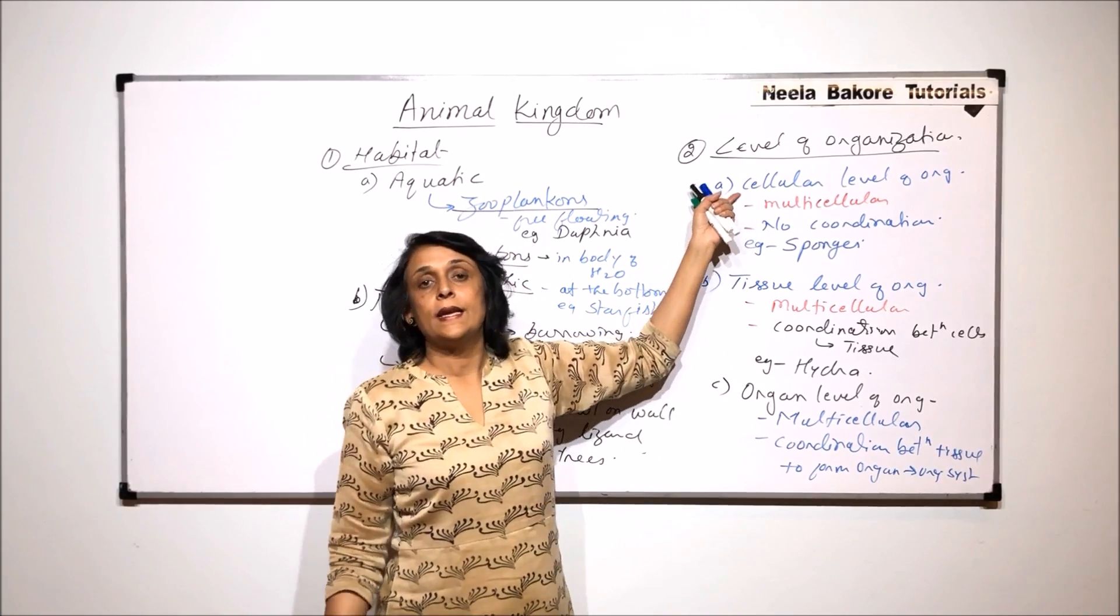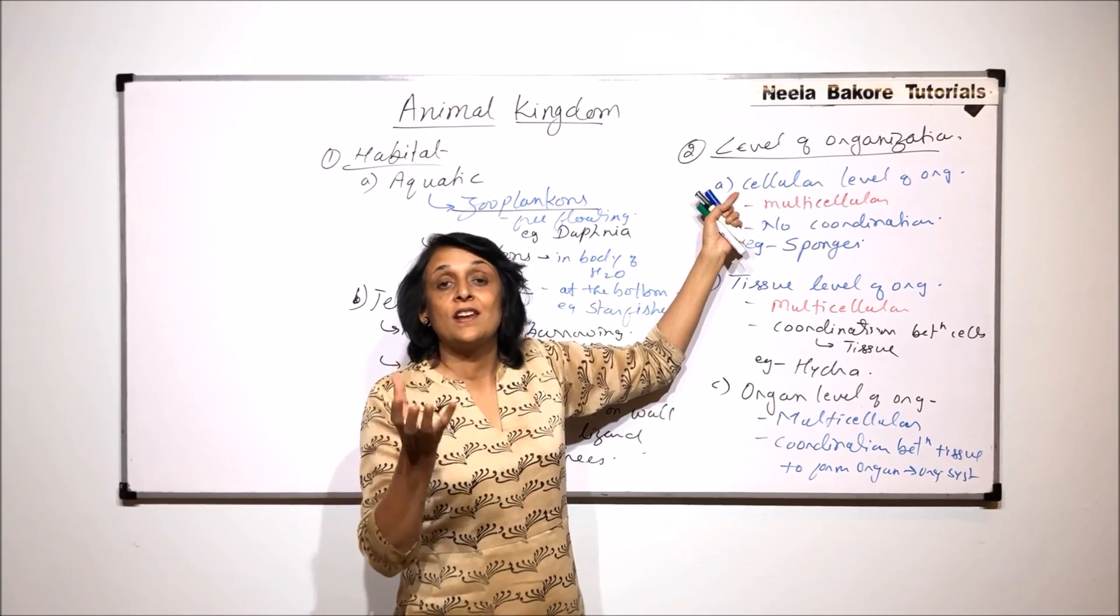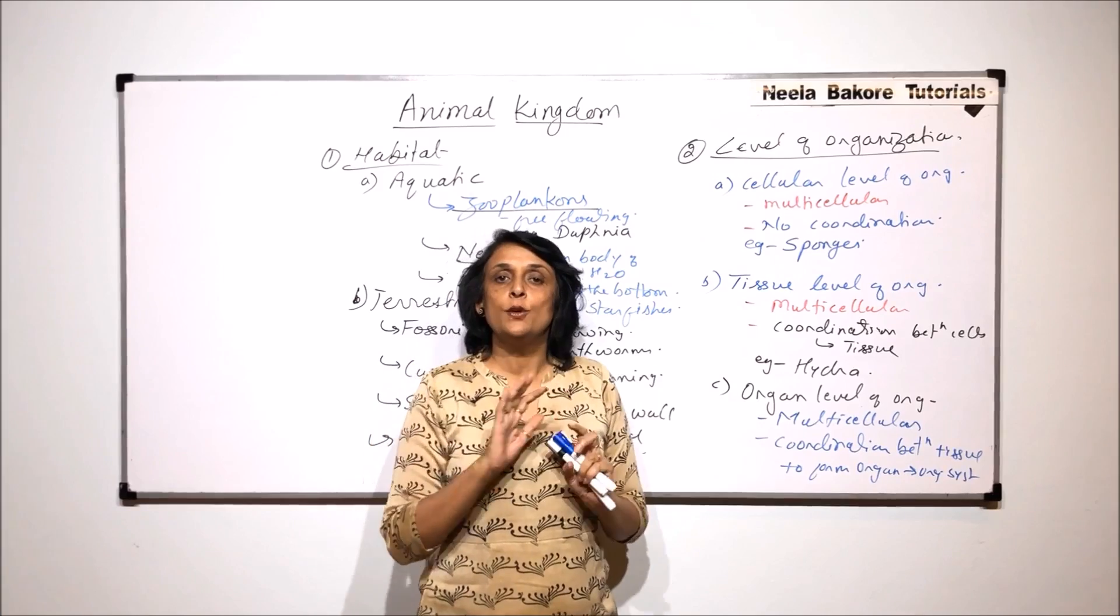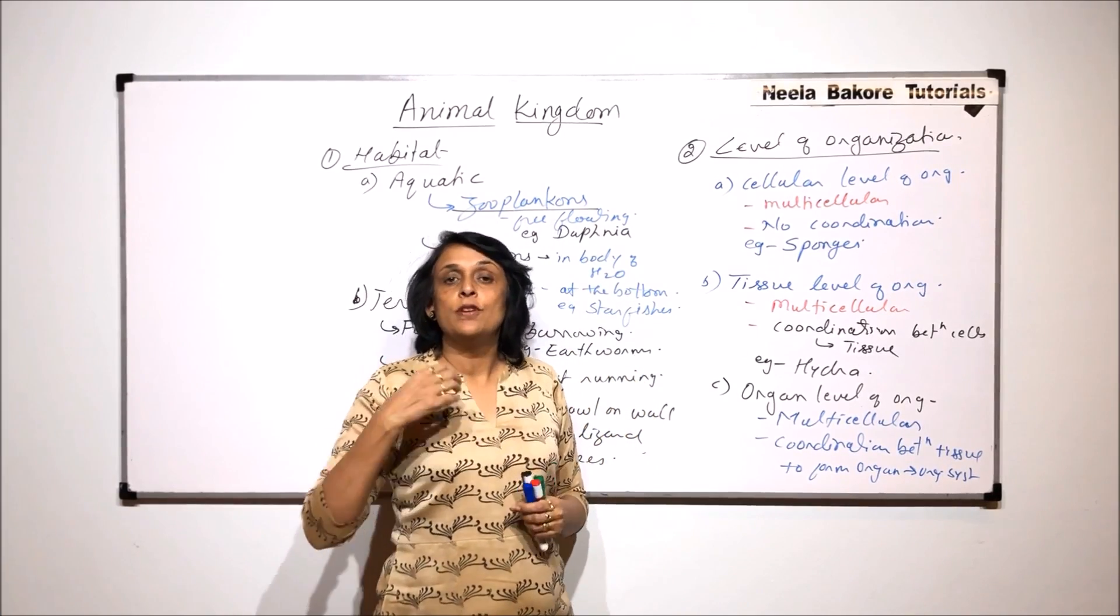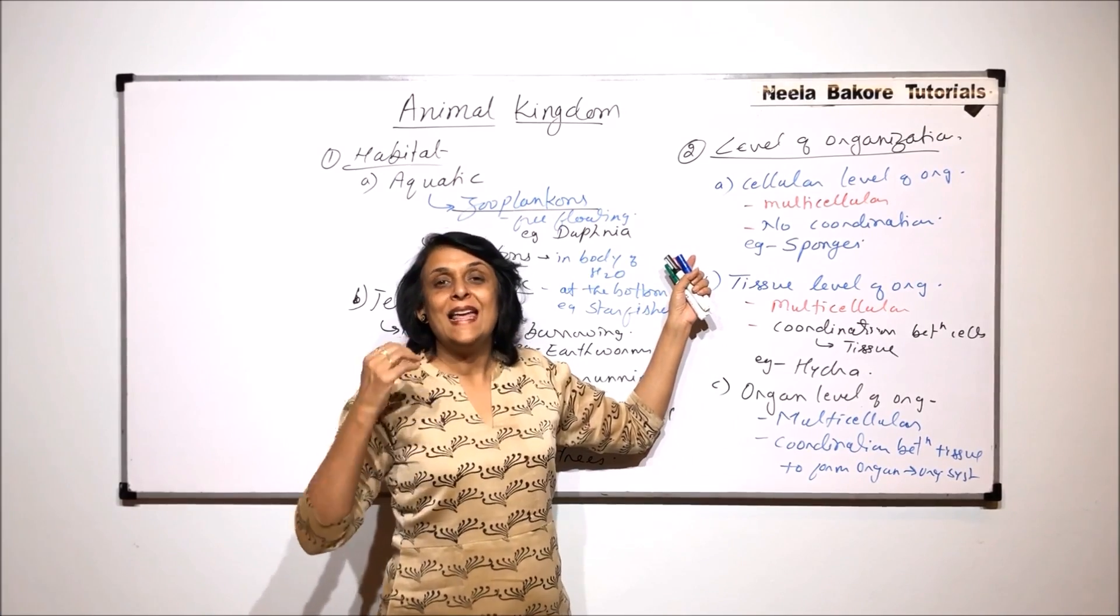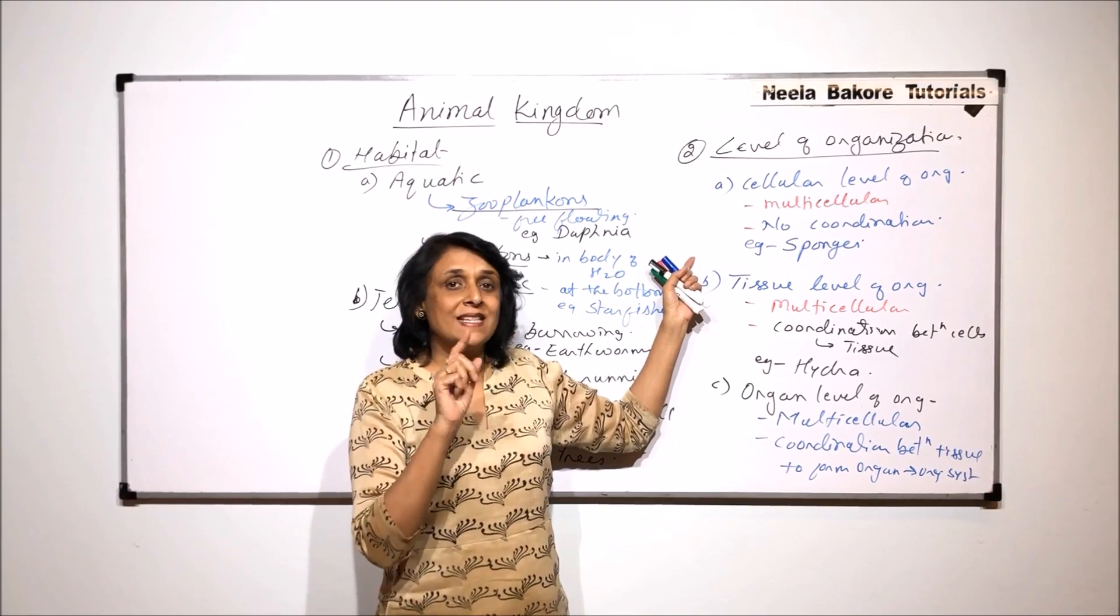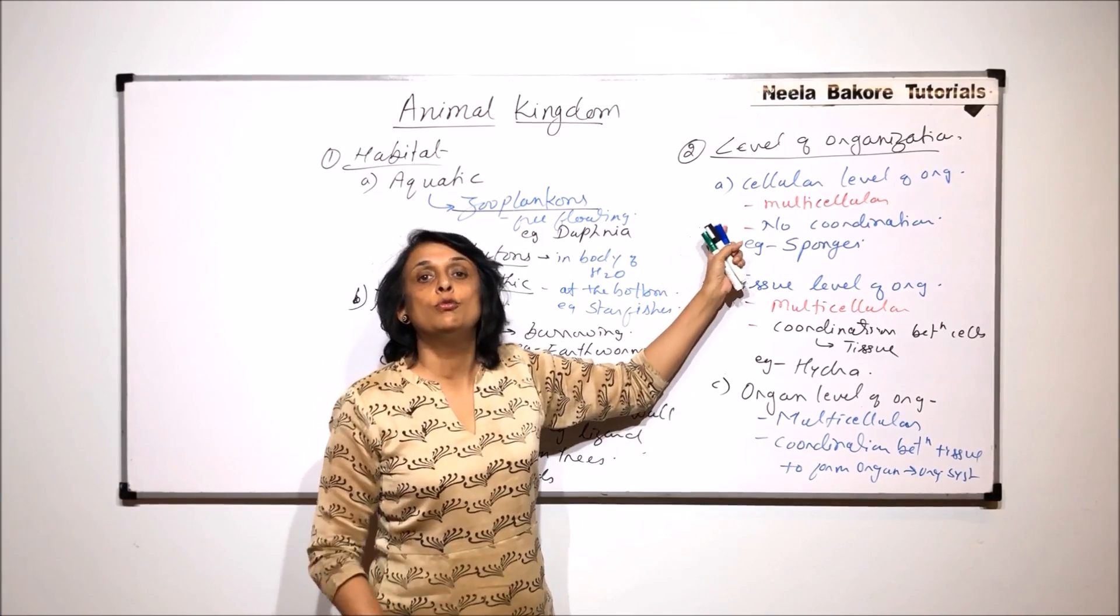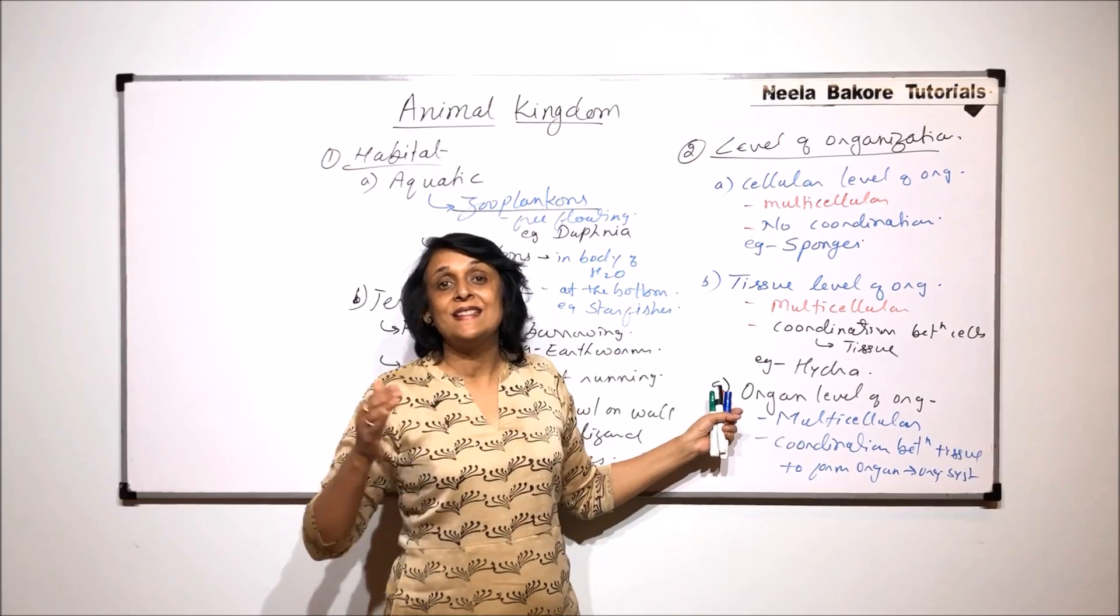As we said here there is cellular level, that means the body of the animal is made up of a cluster of cells. Each cell is performing its individual function. That means it would take oxygen, it would release carbon dioxide, it would obtain its own nourishment, it will eliminate its own excretory material. So everything is done by that particular cell. All the cells of the body do that process.